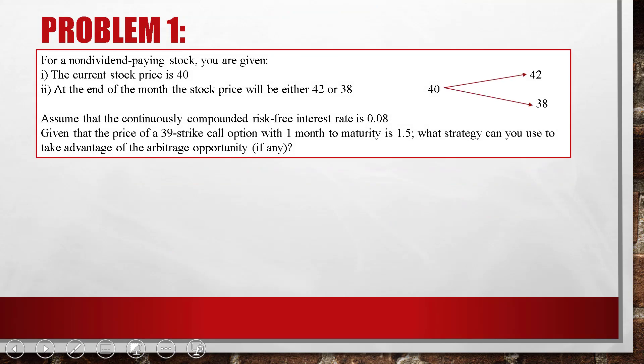For a non-dividend paying stock, you are given the current stock price of 40. At the end of the month, the stock price will be either 42 or 38. Assume the continuously compounded risk-free interest rate is 0.08. The price of a 39-strike call option with one month to maturity is 1.5. What strategy can you use to take advantage of the arbitrage opportunity, if any?